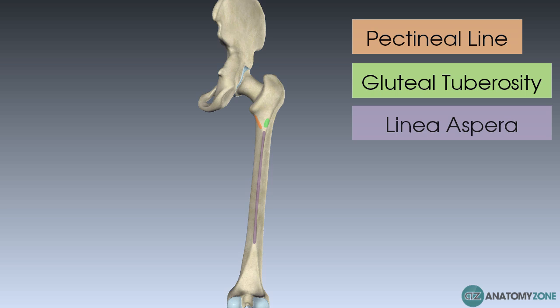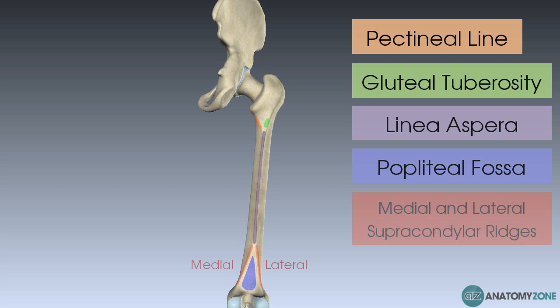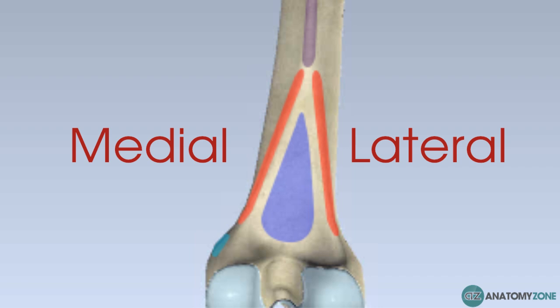Moving distally on the shaft, the linea aspera widens out to form the floor of the popliteal fossa, where the small popliteus muscle lives — heavily involved in the locking and unlocking mechanism of your knee. Finally, the linea aspera widens further to form the medial and lateral supracondylar ridges. The medial one stops at the adductor tubercle, where the muscle adductor magnus attaches.